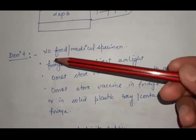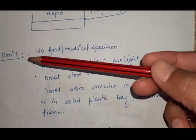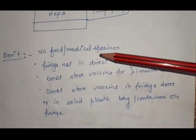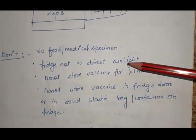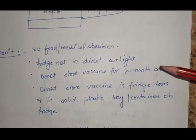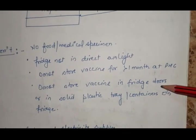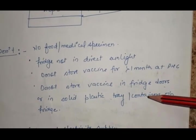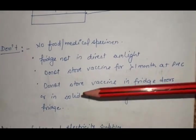DONTs for refrigerator: No food or medical specimens. Fridge not in direct sunlight. Do not store vaccine for more than one month at PHC. Do not store vaccine in fridge doors or in solid plastic tray containers within the fridge.